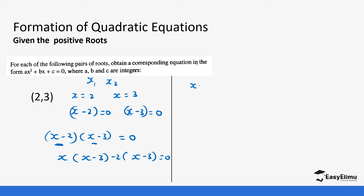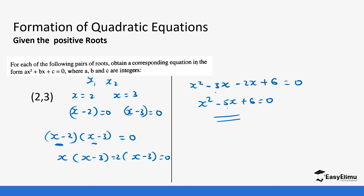So this becomes x squared minus 3x minus 2x, which gives minus 5x, plus 6 equals 0, and this is our equation.